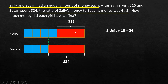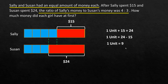That one unit plus $15 equals $24, as we see here. So one unit equals 24 minus 15, which gives us one unit equal to $9.